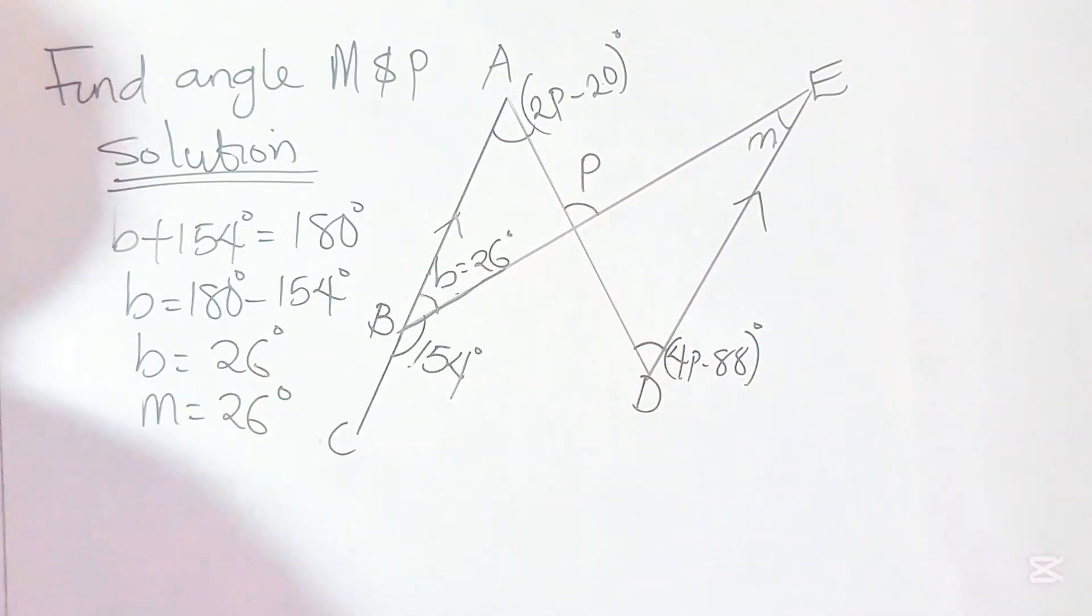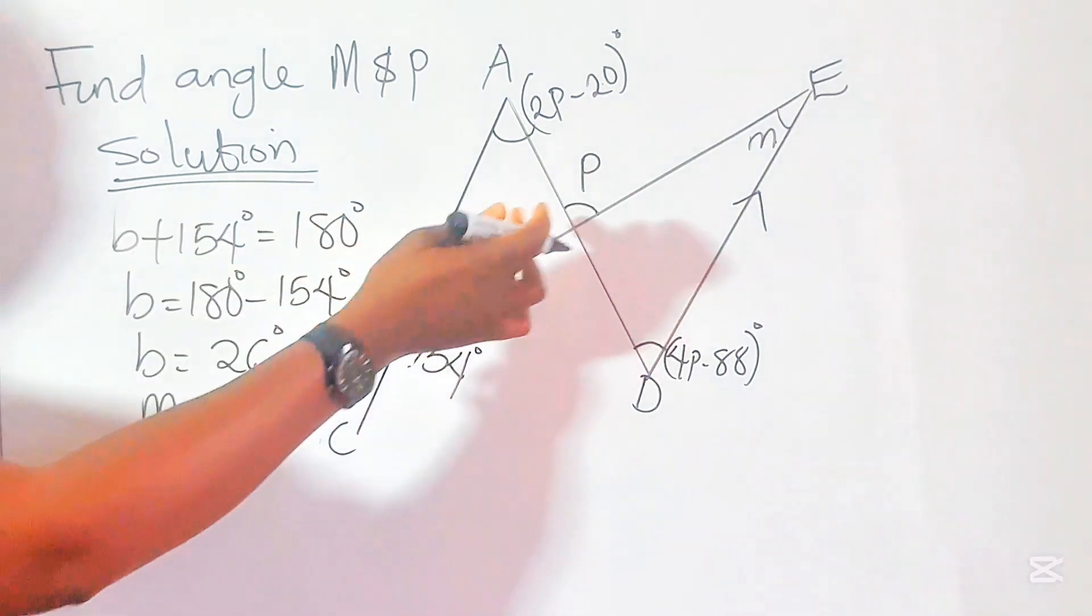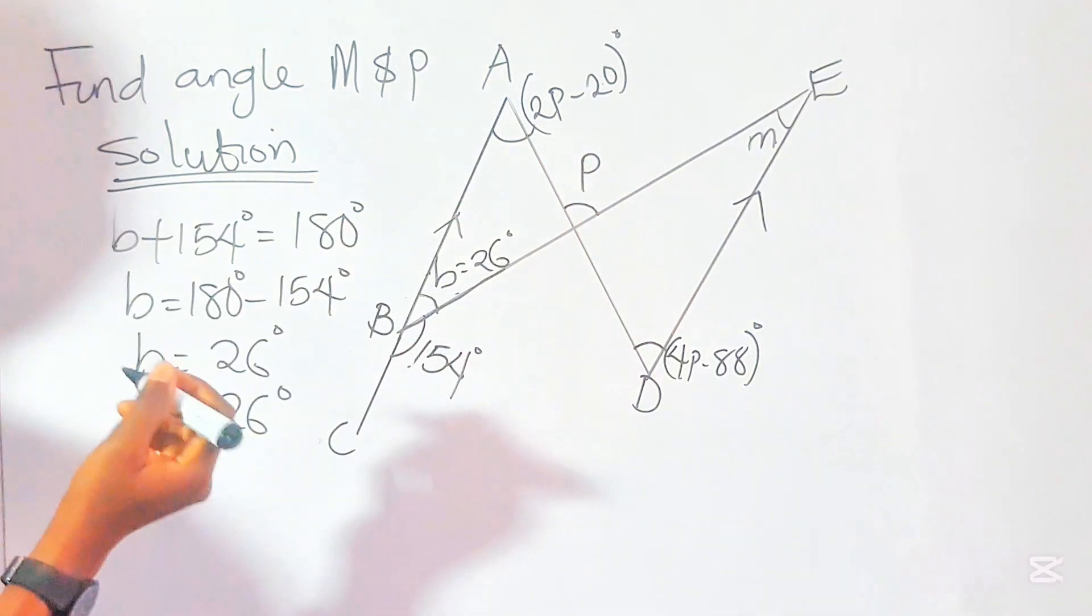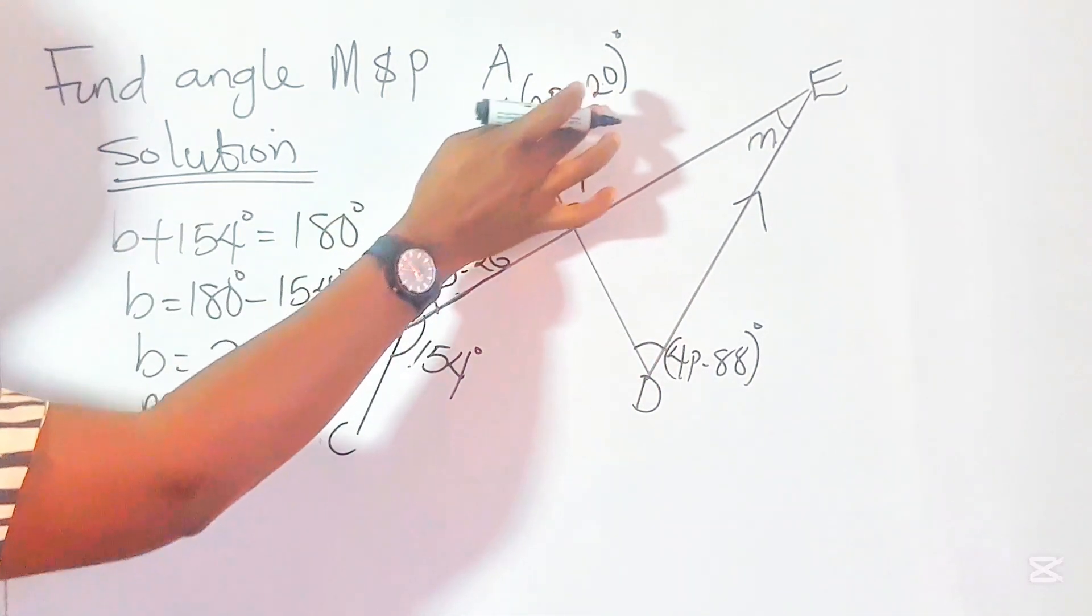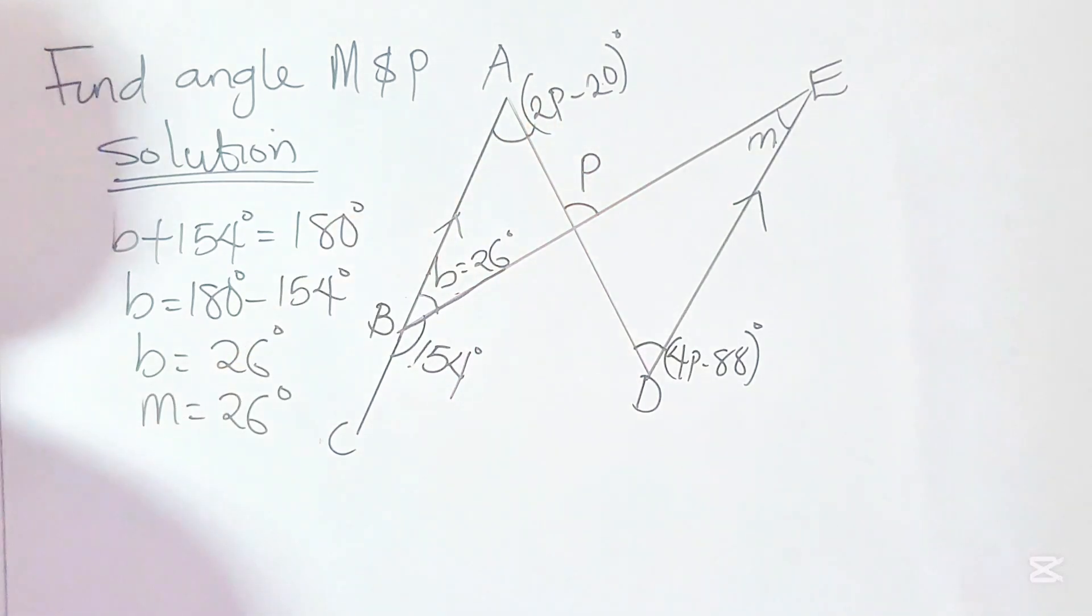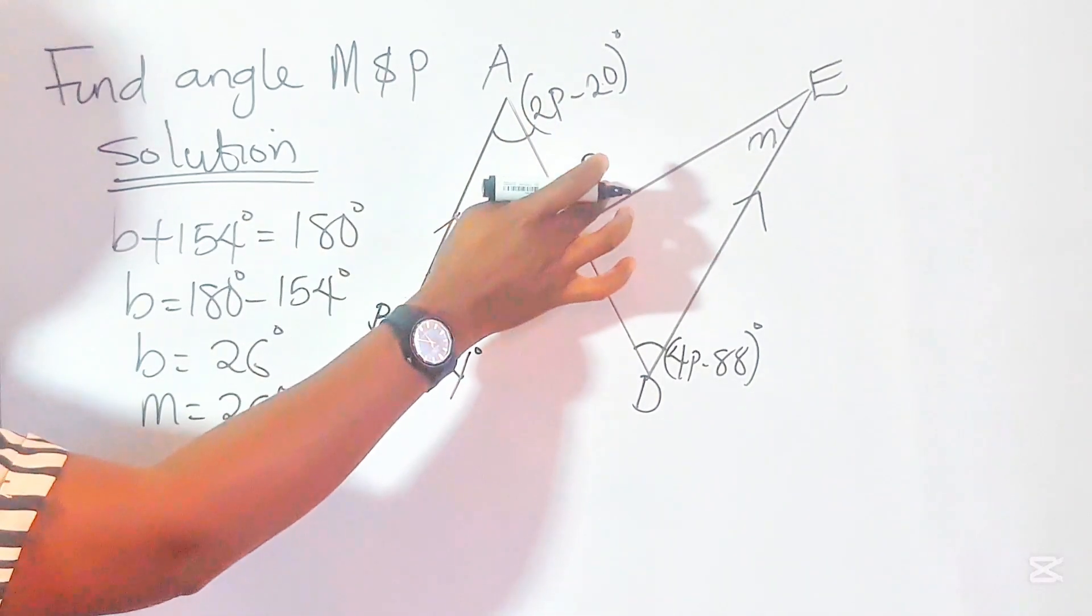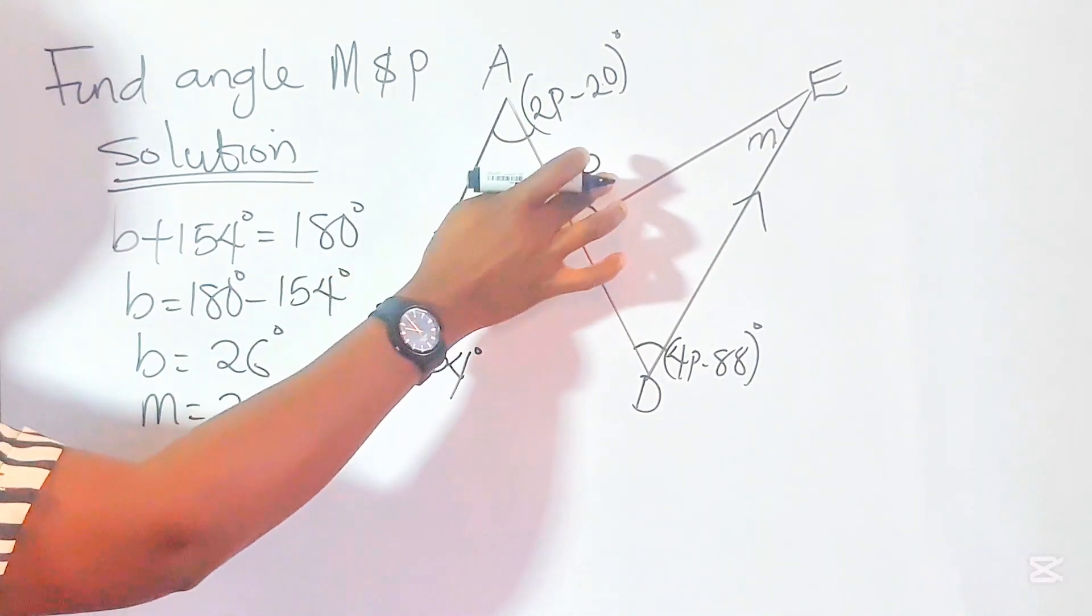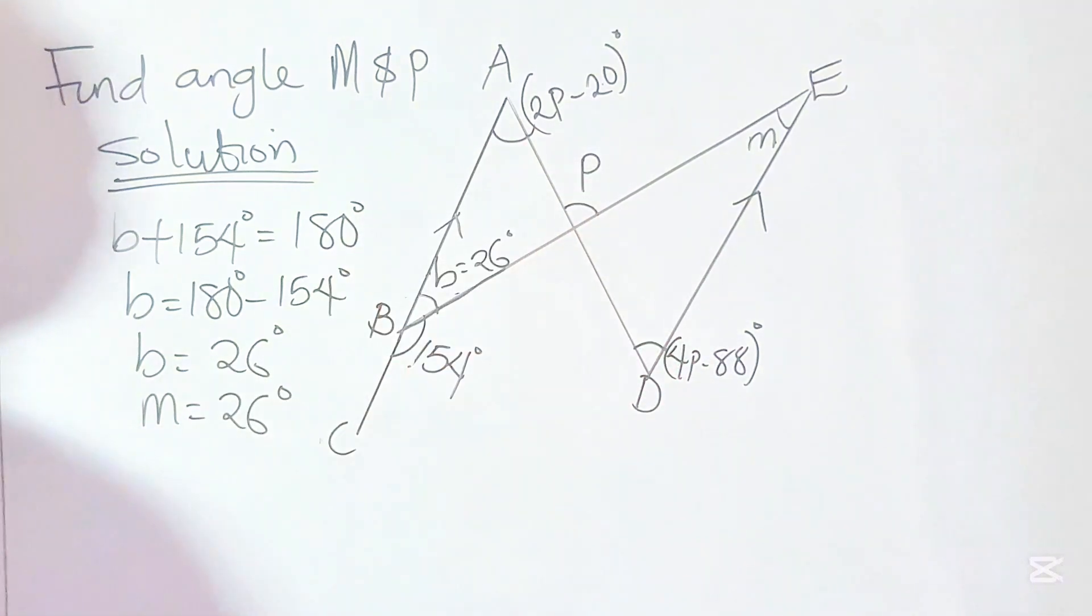Now we have one of the angles. We have to find angle P. For us to be able to find this, we'll first need to figure out the value of P, because there is no way we can find this angle P without finding other missing angles.